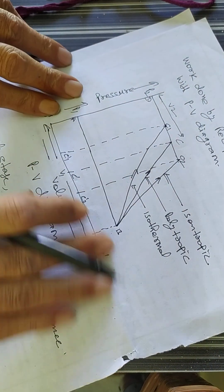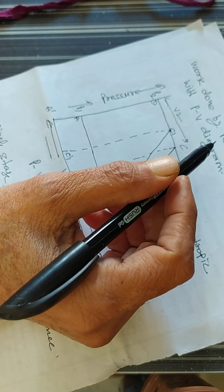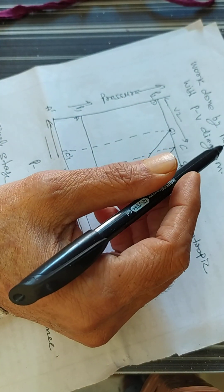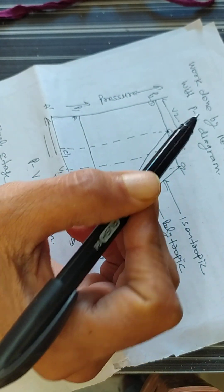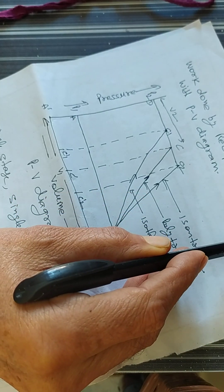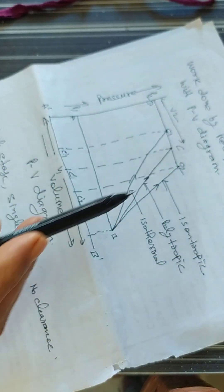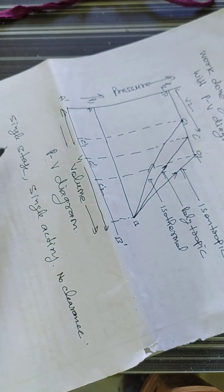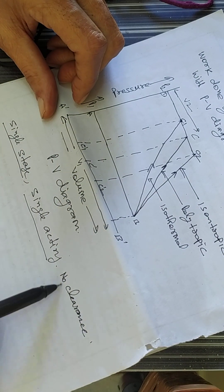Hi students, today's topic is work done by reciprocating compressor with PV diagram — single stage or single acting, no clearance.